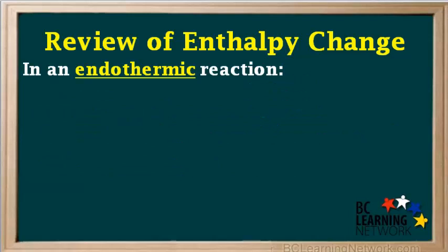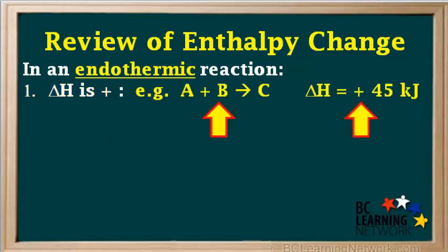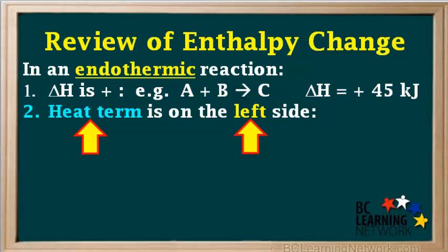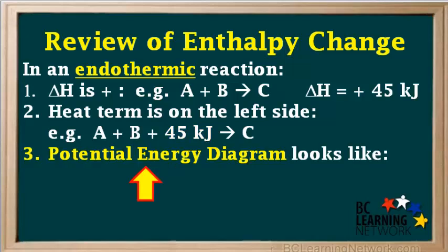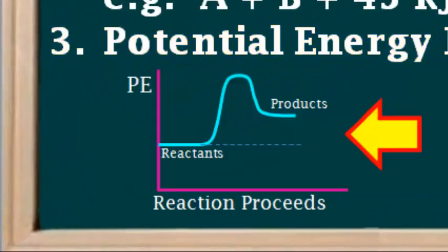We'll start by looking at an endothermic reaction. In an endothermic reaction, enthalpy change, or delta H, is positive. An example could be the reaction A plus B gives C, and delta H written beside the equation with a value of positive 45 kilojoules. Another way of identifying an endothermic reaction is the reaction is written with the heat term on the left side. An example could be A plus B plus 45 kilojoules gives C. This tells us that for every mole of A reacted, 45 kilojoules of heat is absorbed from the surroundings.